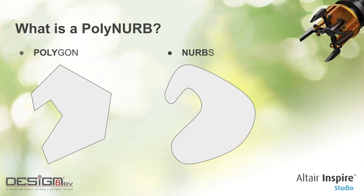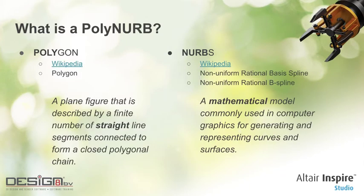To dive in a little deeper, a polygon is a plane figure described by straight lines. NURBS stands for Non-Uniform Rational Basis Spline, or B-Spline. It is also a mathematical model — the computer uses it to generate and represent curves and surfaces using mathematical equations of a higher order, so you can create more complex shapes.